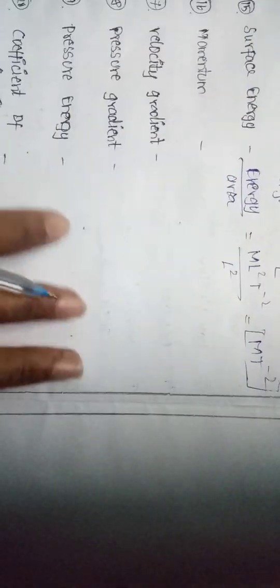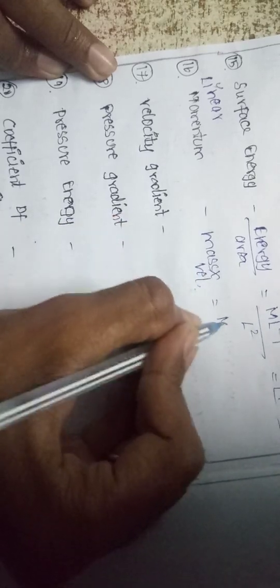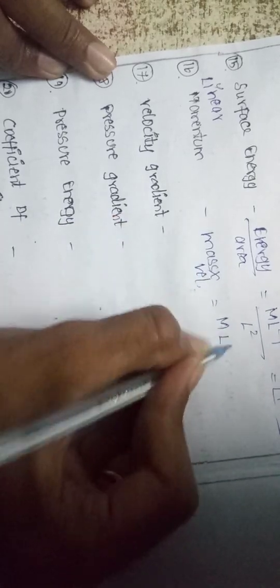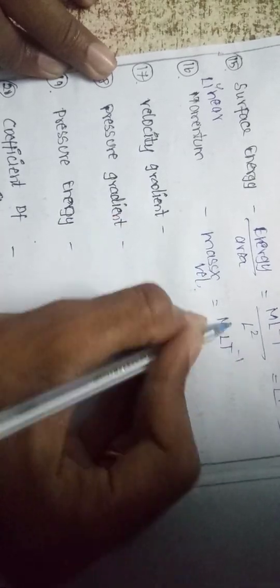Linear momentum is mass into velocity. Mass is M, velocity is L T⁻¹, so linear momentum is M L T⁻¹.